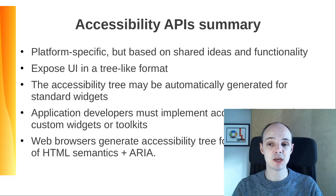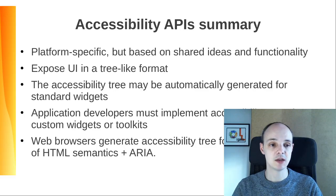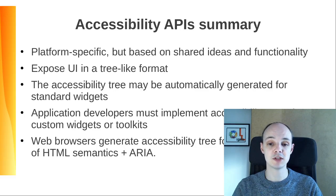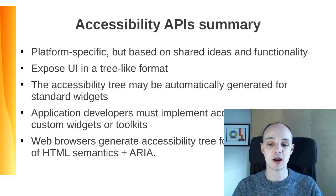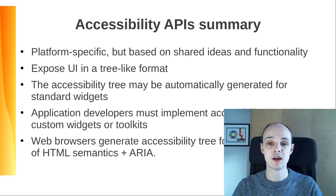Before we move on, let's make a recap about accessibility APIs and the accessibility tree. These APIs are platform-specific but based on shared ideas and functionality. They expose the UI of applications in a tree-like format, which ATs will consume. This tree may be automatically generated for standard widgets with no specific coding, but in the case of more complex software, app developers must implement accessibility APIs for custom widgets or toolkits. Web browsers are an example of this more complex software. In addition to their own UI, they must generate the accessibility tree for web contents, using HTML hierarchy and semantics with the ARIA standard for advanced features.